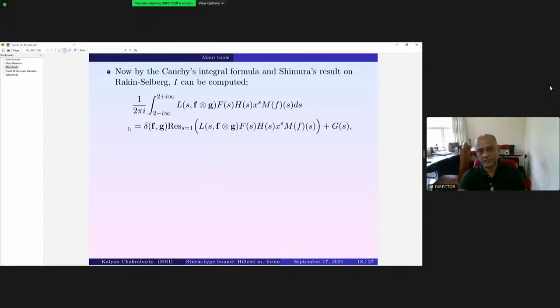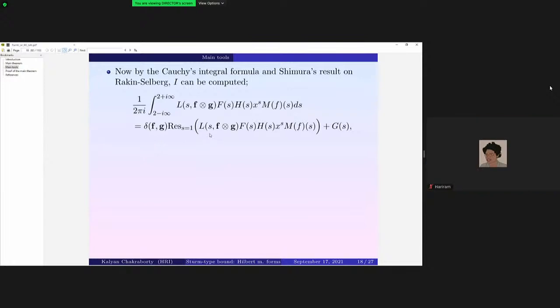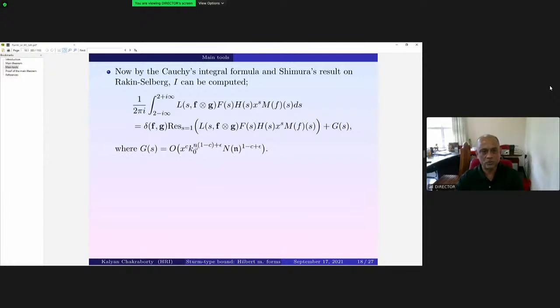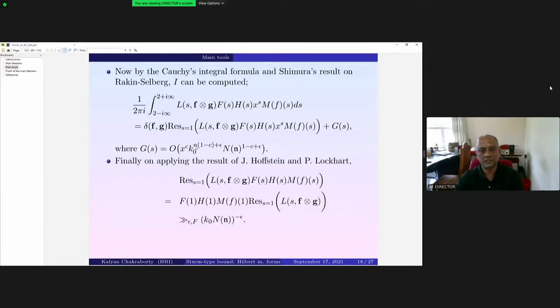And then using Cauchy's integral formula and that Shimura result that I was stating, one can calculate this. The horizontal integrals, there will be three things that you have to calculate. The horizontal integrals, that's a little bit of work to show that that vanishes. And then you can use Cauchy's integral formula and calculate this integral. And so this is either one or zero depending on whether f is equal to g or f not equals g, because there is a pole or no pole. And this residue can be calculated by using, as I told you, the Rankin-Selberg thing. And there is this result of Hockstein and Lockhart which helps you to calculate this residue at s equals one, and that turns out to be that a_ff will come out which is k_0 N(n)^(-epsilon).